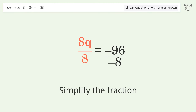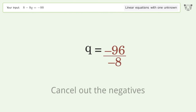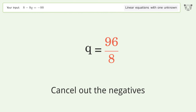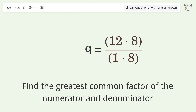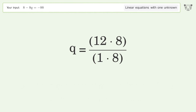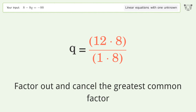Simplify the fraction. Cancel out the negatives. Find the greatest common factor of the numerator and denominator. Factor out and cancel the greatest common factor.